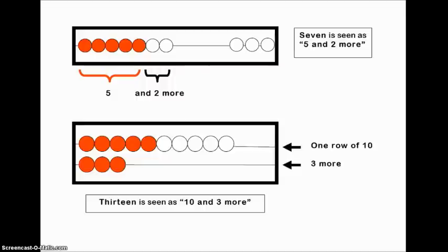Then if we look at the second example, we're looking at 13. Thirteen looks like 10 and three more. So we have 10 beads on the top row and three on the bottom row.